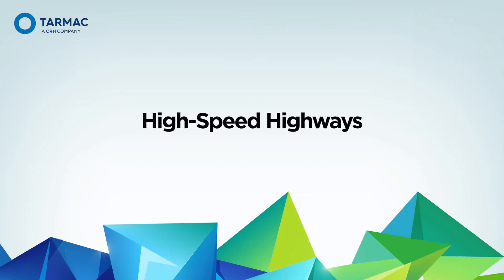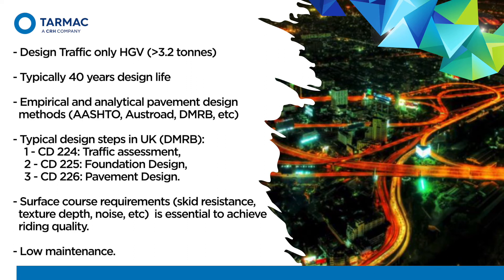The first and most common design is for highways or high-speed highways. Typically, the design traffic only considers heavy goods vehicles above 3.2 tonnes — anything below 3.2 tonnes, i.e. cars, motorbikes, cyclists, and pedestrians, is negligible in the design. Typically, the design for pavement here lasts for 40 years. When we say 40-year design life, this means the overall structure of the pavement, not the surfacing or the base and sub-base layers — it is mainly the overall pavement thickness.